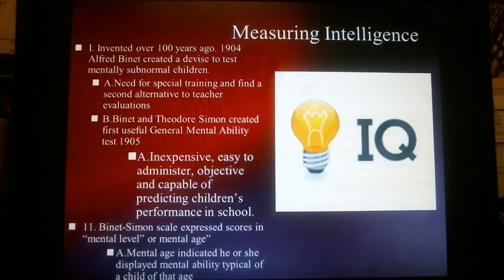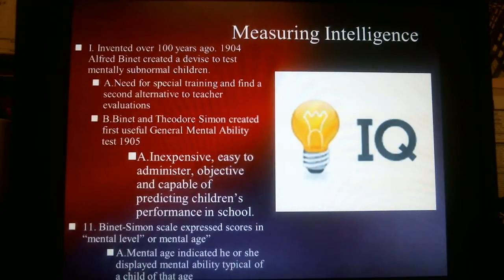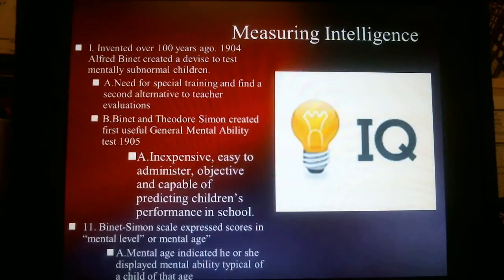The Binet-Simon scale looked at what was known as the mental level, or mental age, of the child. Mental age is indicated when a child displays mental ability typical of that age. For example, if you are 15 years old and take the test, you should score at the average level of a 15-year-old. If you scored above that, you were considered higher intelligence; below that, lesser intelligence.